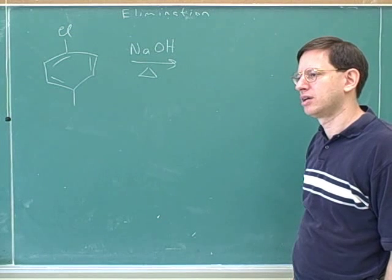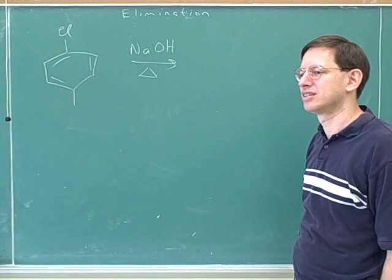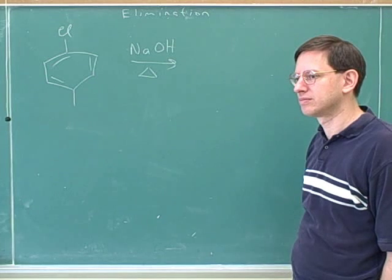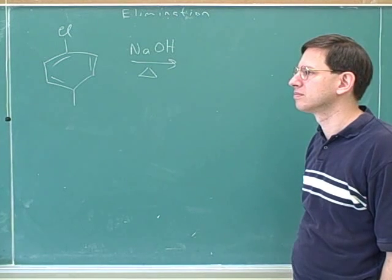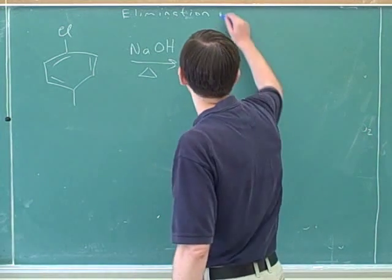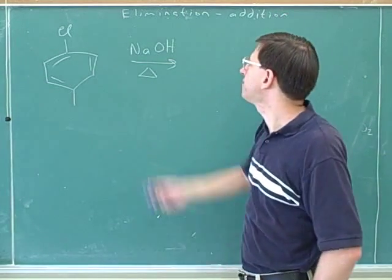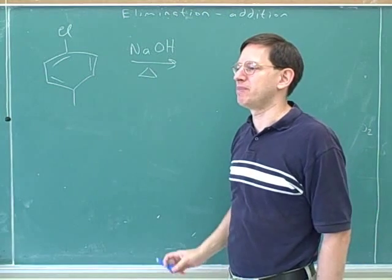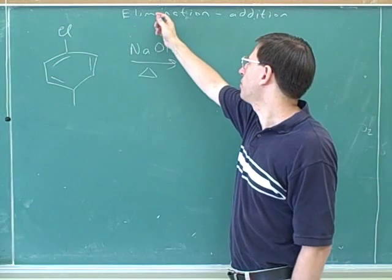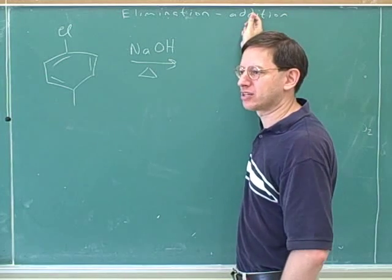What does elimination mean? Addition is adding a pi bond, and elimination is getting rid of a pi bond — but we actually got those reversed. Elimination is when you form a pi bond, and addition is when you remove a pi bond. The terms seem opposite to their meaning because you form a pi bond by eliminating two groups, and you remove a pi bond by adding two groups.